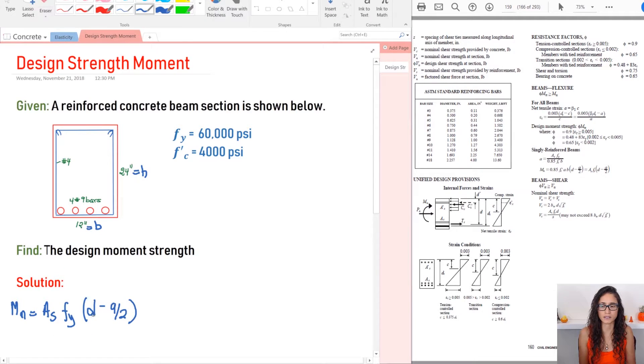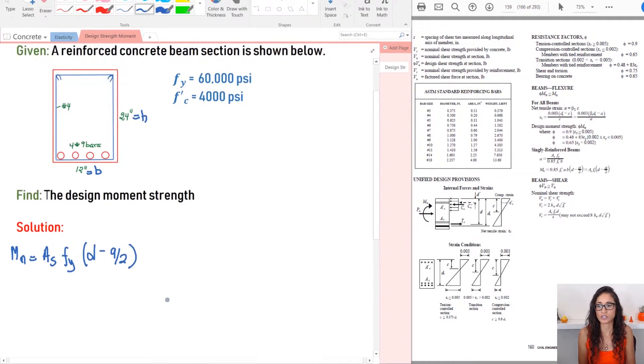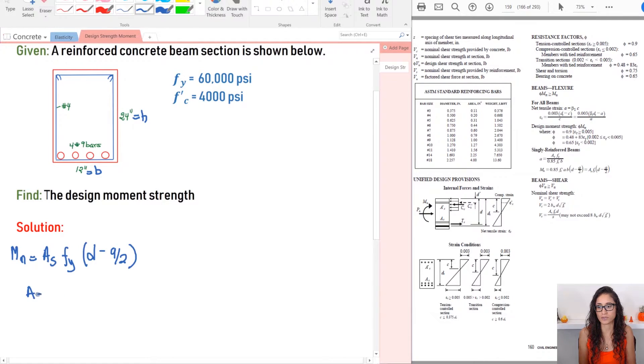So to be able to solve this, we need to find D and we need to find A, right? And we also need to find AS, but it's really easy to calculate AS. So let's first calculate AS. So we have AS, which is the area of the steel. We have four bars, right? Number nine. So you're going to come here and you're going to look at the area of number 9 bars, which is one inch squared. So you're just going to multiply this by one. So you're going to get four inch squared. So that's the area of the steel.